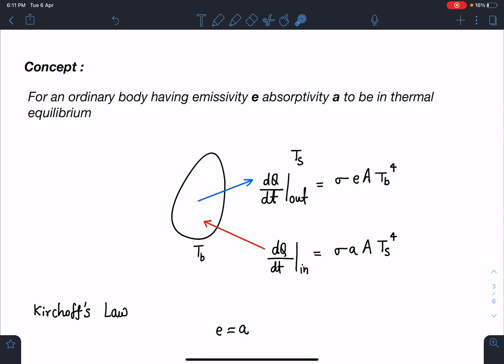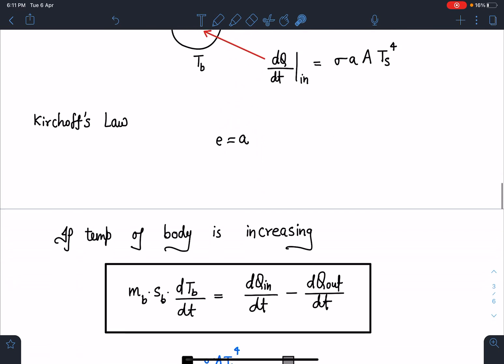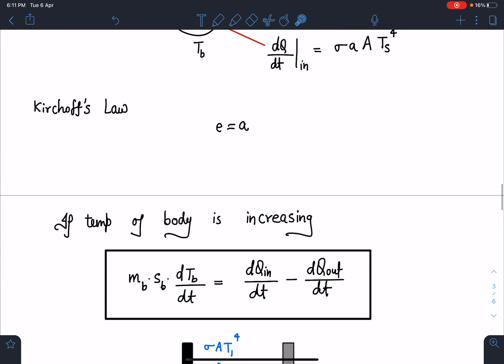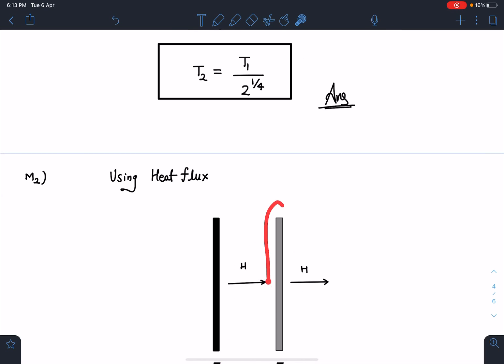If the temperature of the body is increasing, I can write total energy which is coming in minus energy lost, this net rate of heat. For this part, the heat flux here and here must be same; then only this can stay in thermal equilibrium.